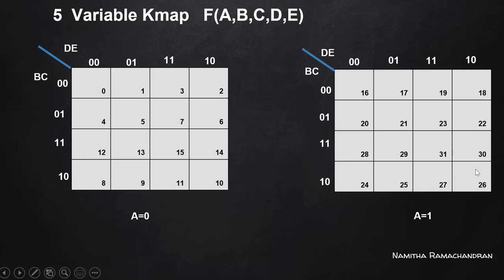So total how many cells are present? With a equal to 0 and a equal to 1, a total of 32 different cells are available — values 0 to 15 in one KMAP and 16 to 31 in the other. This is the general representation of a 5-variable KMAP using two 4-variable KMAPs, with 'a' equal to 0 for the first and 'a' equal to 1 for the second.